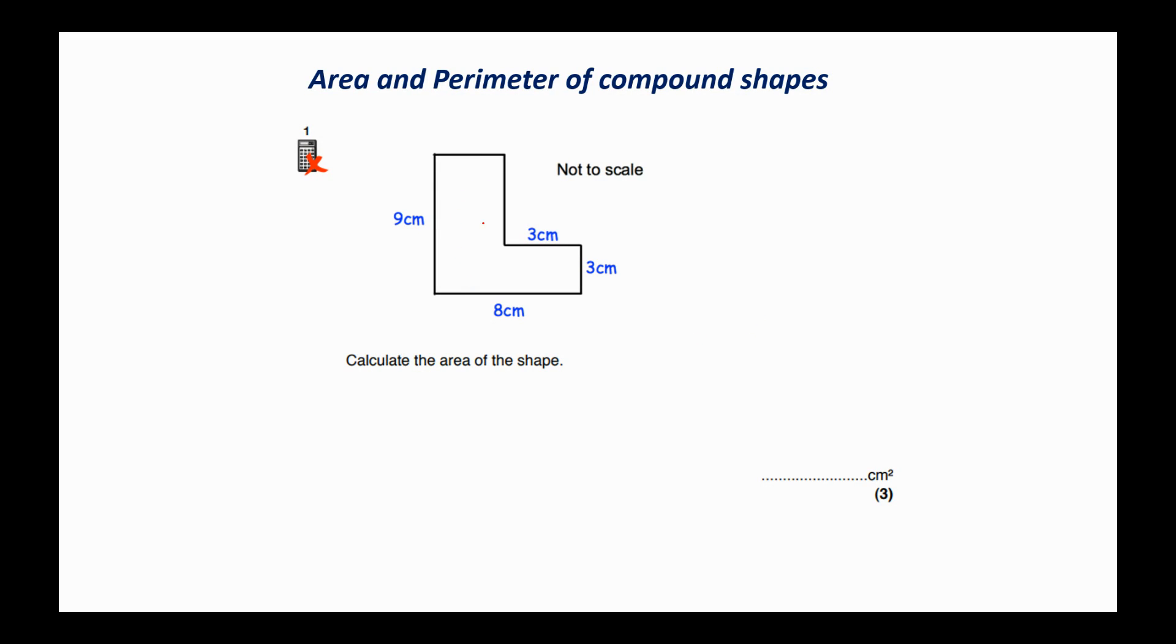So we have this L shape just here. The best thing to do is try and split the shape up into two parts. Now there's a couple of choices. We could split it this way so that we have a tall rectangle at the top and a shorter rectangle along the bottom.